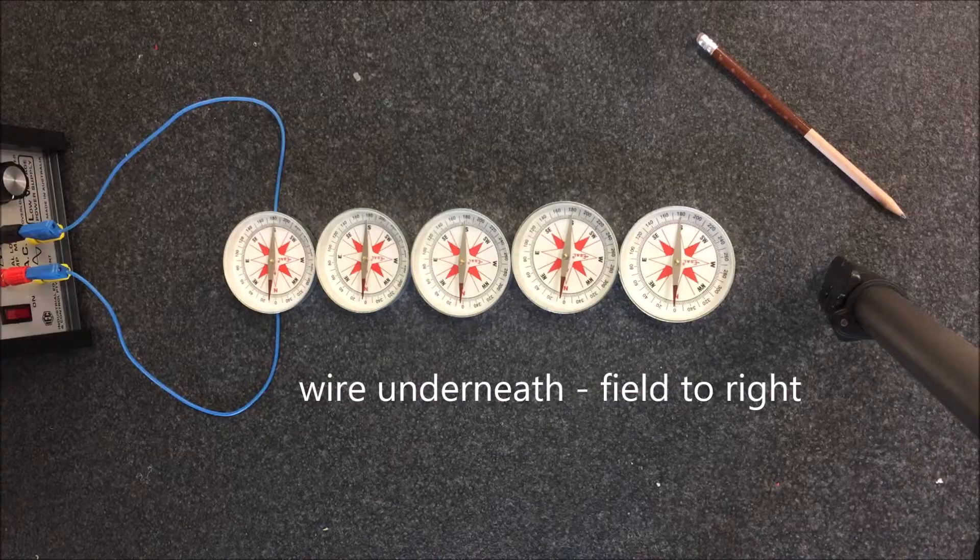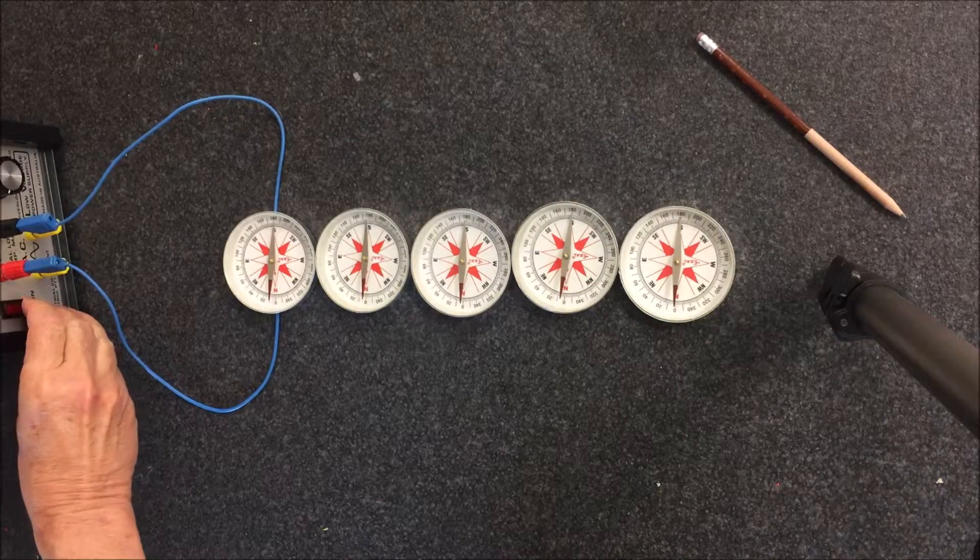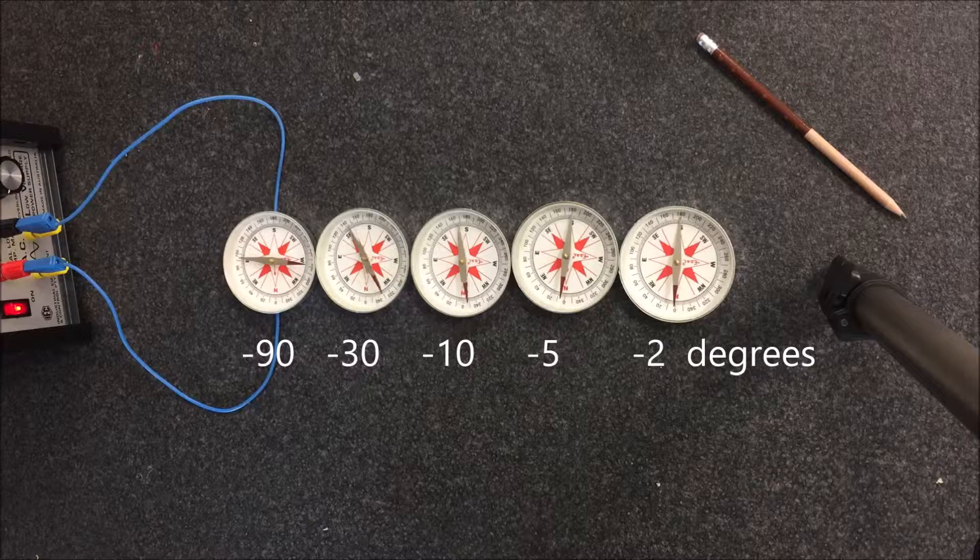Now, I put the compass wire underneath the first compass, and you'll notice the deflections are much the same, except they're in the opposite direction.